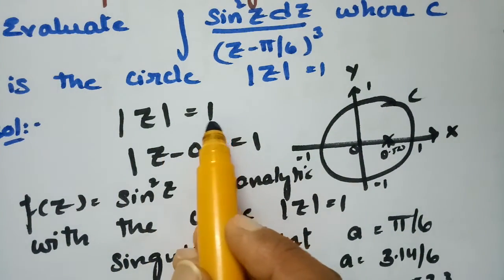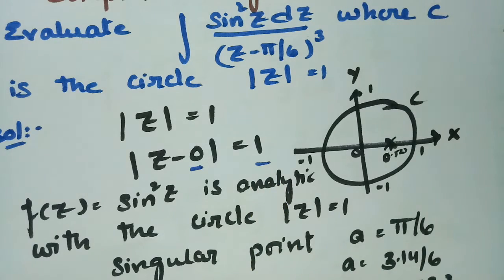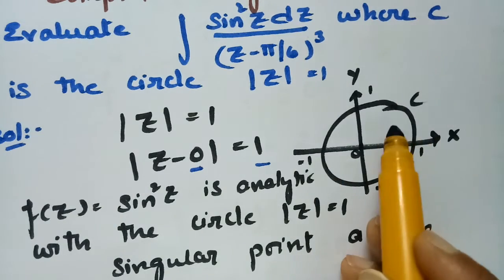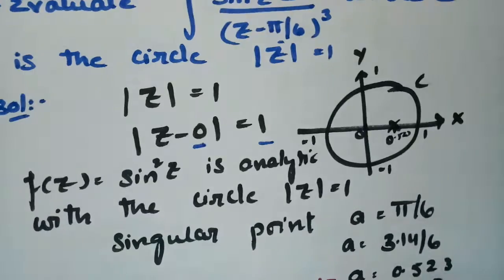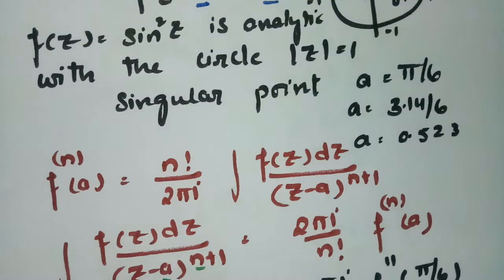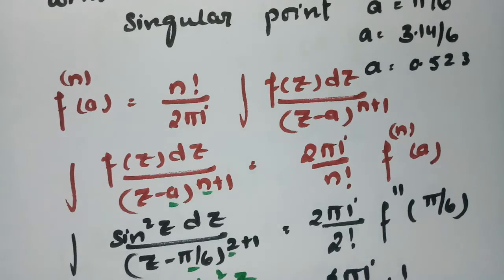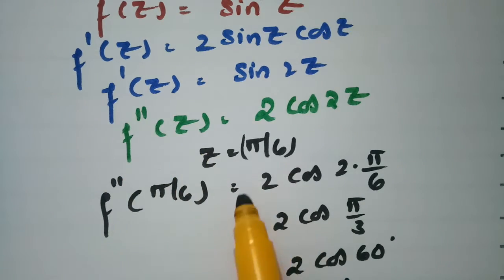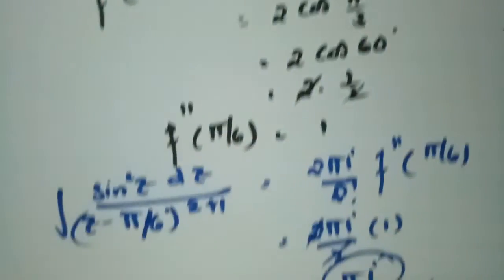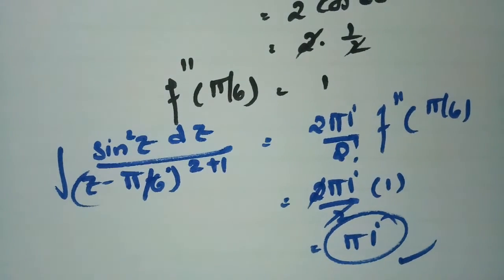In summary: |z| = 1 is a circle with center 0 and radius 1. The singular point π/6 ≈ 0.52 lies within the circle, so we apply the generalized Cauchy's integral theorem. Comparing the integral gives f(z) = sin²z, a = π/6, n = 2. Computing the second derivative and substituting z = π/6 gives f''(π/6) = 1, and the final answer is πi. Thank you — please share with friends and practice.